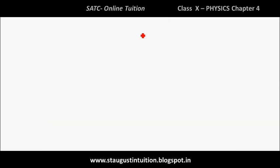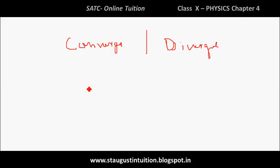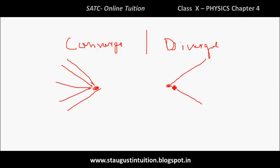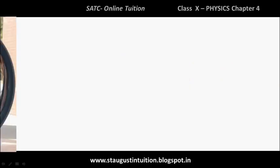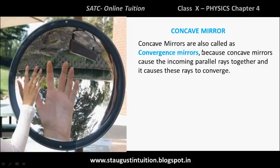Let's start with the key terms: converge and diverge. Converge means rays coming together to a point. Diverge means rays spreading apart. Concave mirrors are called convergence mirrors because a concave mirror causes incoming parallel rays of light to converge — it causes these rays to come together at a point.